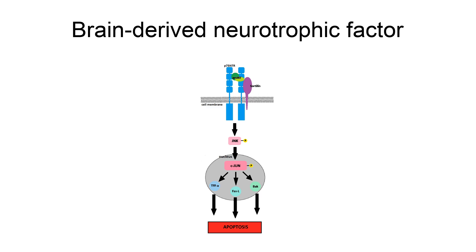BDNF was the second neurotrophic factor to be characterized after NGF and before neurotrophin-3. BDNF is one of the most active substances to stimulate neurogenesis. Mice born without the ability to make BDNF suffer developmental defects in the brain and sensory nervous system, and usually die soon after birth, suggesting that BDNF plays an important role in normal neural development. Despite its name, BDNF is actually found in a range of tissue and cell types, not just the brain.